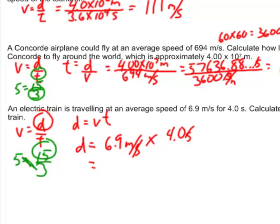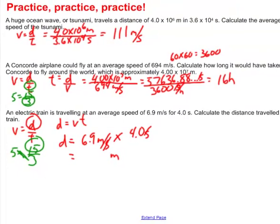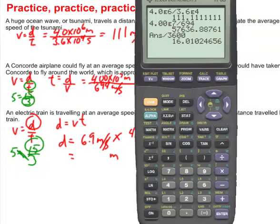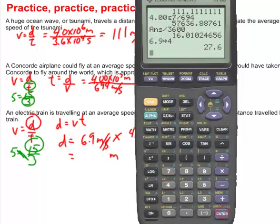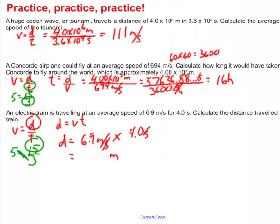So we bring up the calculator and we say, what do I get if I take 6.9 meters per second, multiply it by 4 seconds? We get 27.6 meters is how far this electric train will travel.